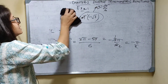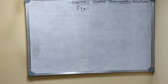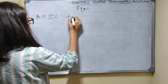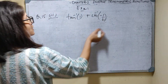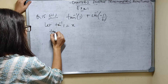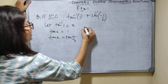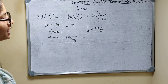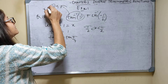Now question number 15, third part: find tan inverse(1) plus cos inverse(minus 1 by 2). Let tan inverse(1) equal x, so tan x equals 1. Tan 45 degrees equals 1, so x equals pi by 4. And pi by 4 is 45 degrees, which lies between minus pi by 2 and pi by 2.